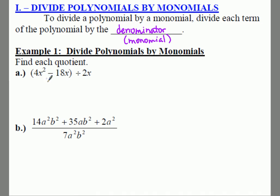We have a binomial divided by 2x. Another way you could see this written is (4x² - 18x) ÷ 2x, or all over 2x. We have done this before where we split this up into two separate fractions: 4x²/2x and 18x/2x, because both terms are being divided by 2x.